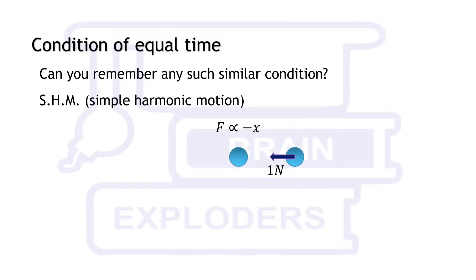Say at any particular position, the force is 1 newton. If this distance is tripled, the force also becomes triple, that is 3 newton.